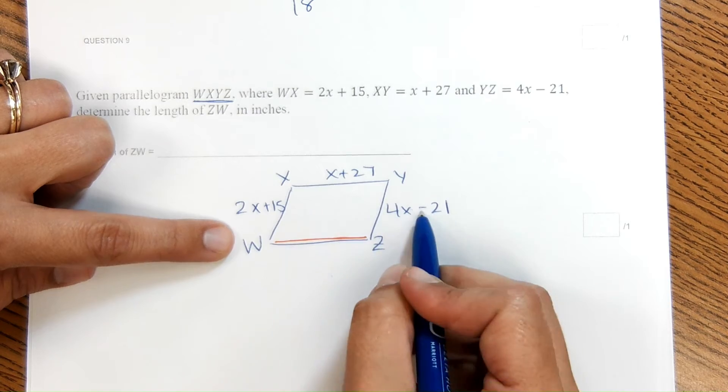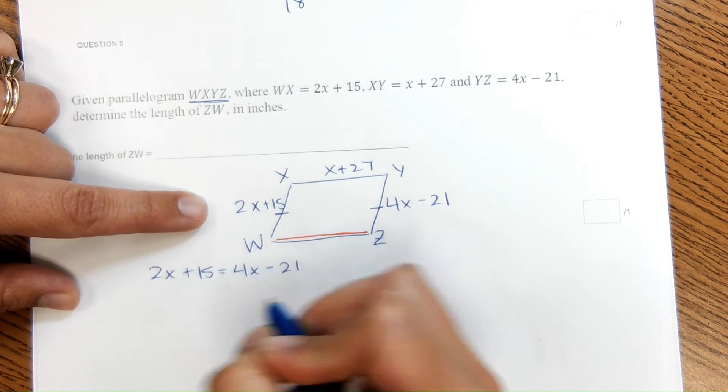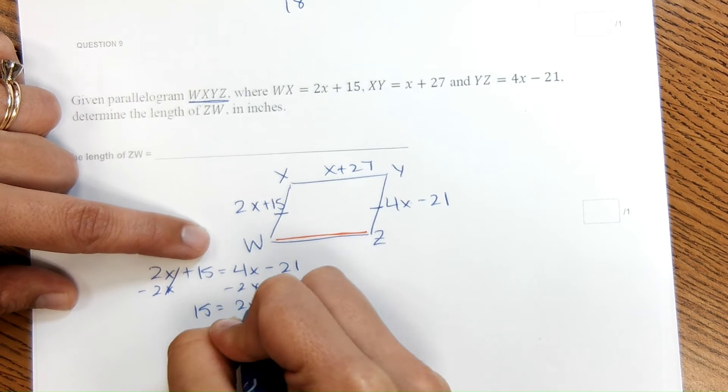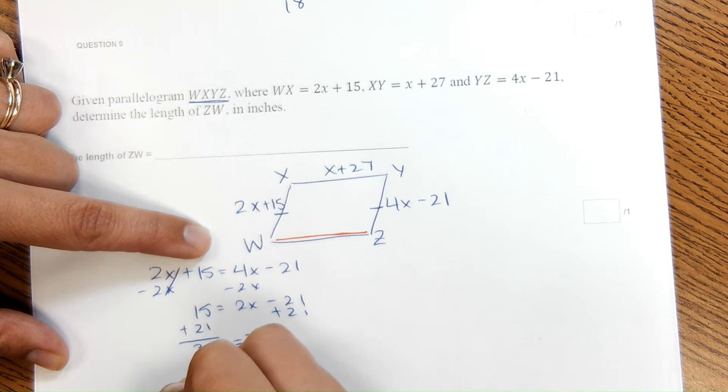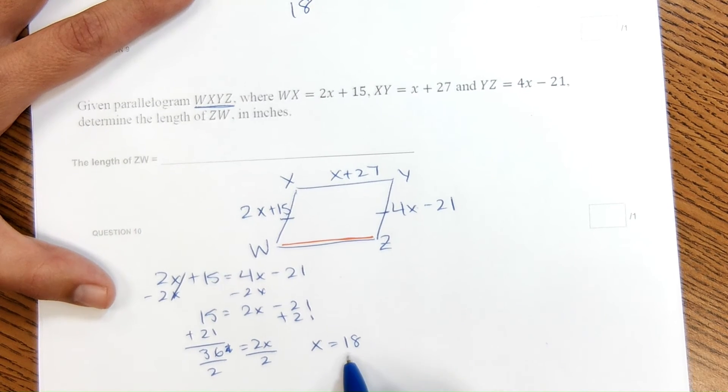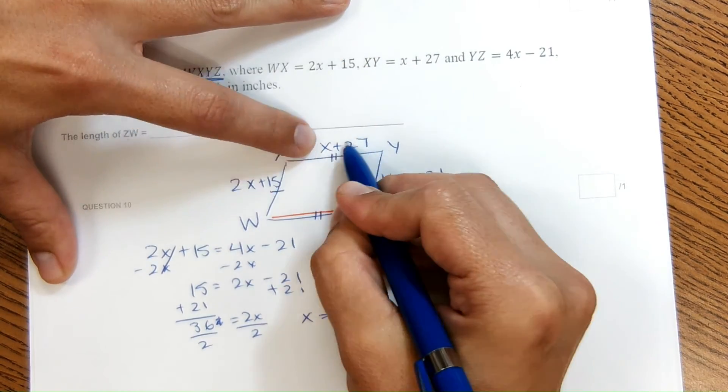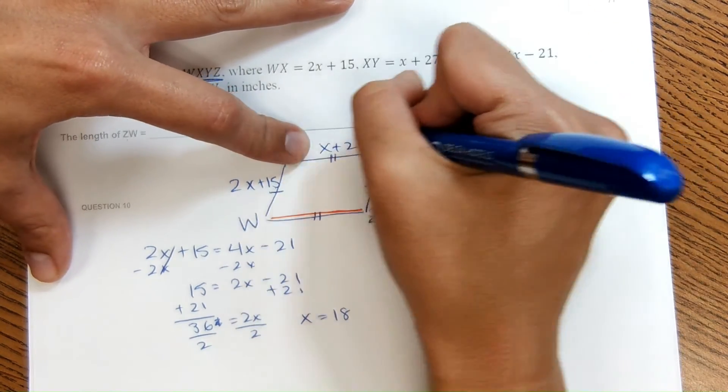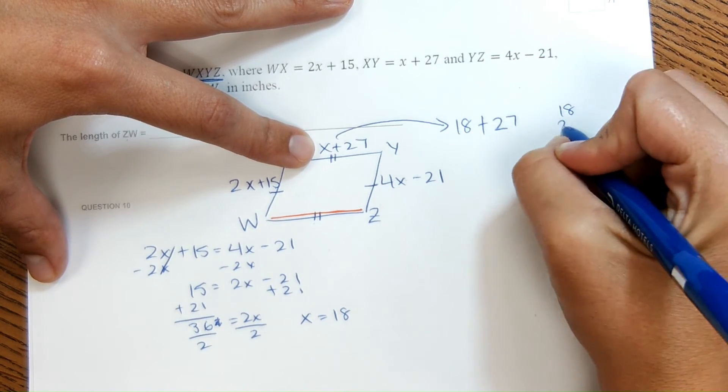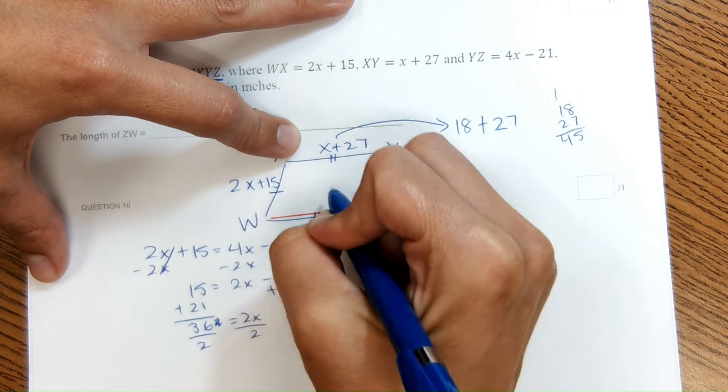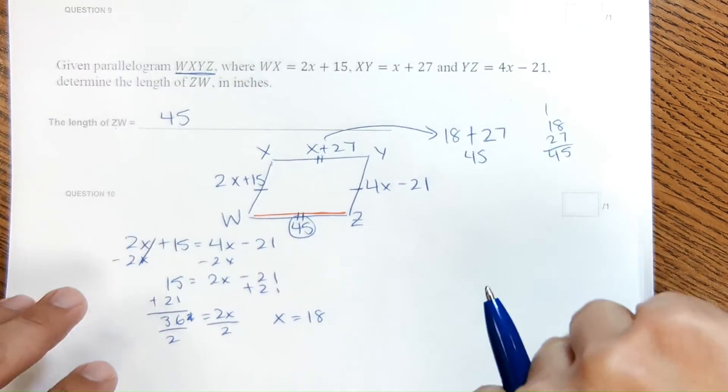So this is going to be multiple steps. First things first, I'm going to put these equal to each other to find X, since in a parallelogram, opposite sides are equal. So 2X plus 15 equals 4X minus 21. And I'm just going to go through the process of solving. We get X equals 18. So X equals 18. But it doesn't ask for X, it asks for the length of ZW. Since it's a parallelogram, this is the same length as this. So if I find the length of XY, then I'll have the length of ZW. So I'm going to plug in 18 for X, 18 plus 27, which would be 45. So that means this must be 45. So the length of ZW is 45.